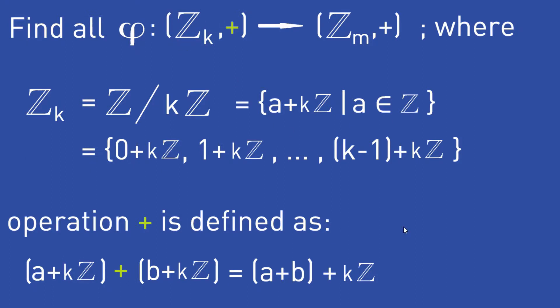When I was in university, I learned that you can use the theorem on homomorphisms together with Lagrange's theorem to find all the homomorphisms from Z_K to Z_M. But I haven't liked this approach too much, so I tried to find an easier way. I found a simple condition you can check to find all group homomorphisms from Z_K to Z_M without using any theorems at all.